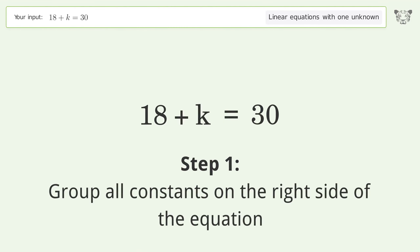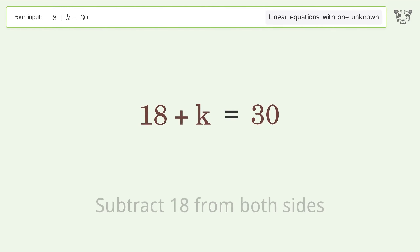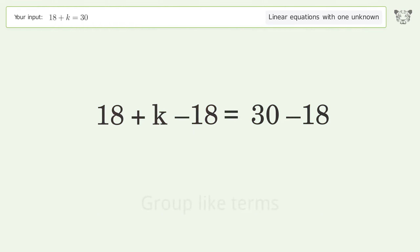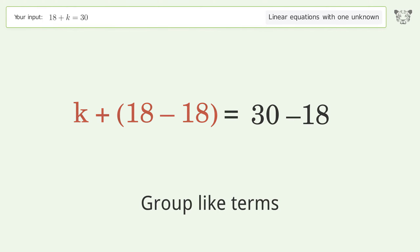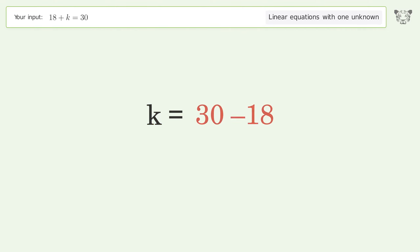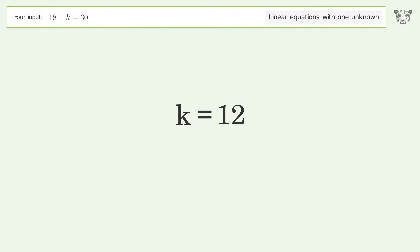Group all constants on the right side of the equation. Subtract 18 from both sides. Group like terms. Simplify the arithmetic. And so the final result is k equals 12.